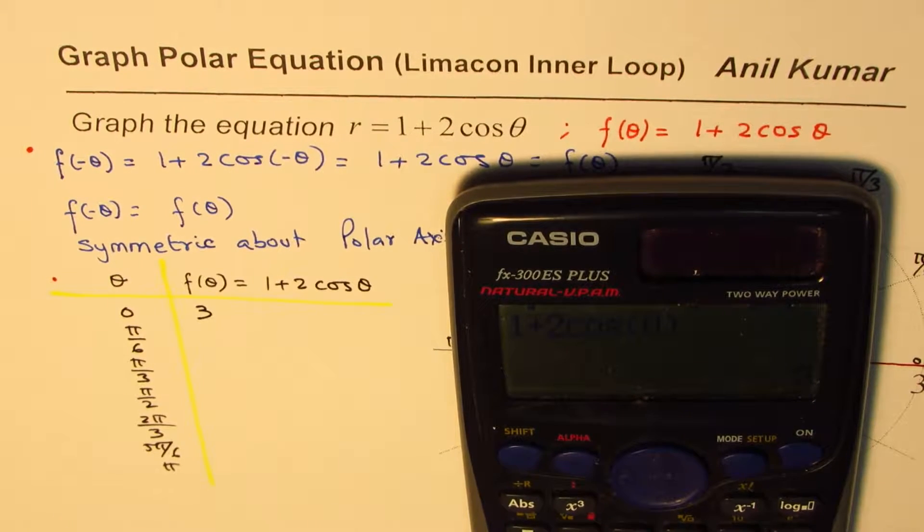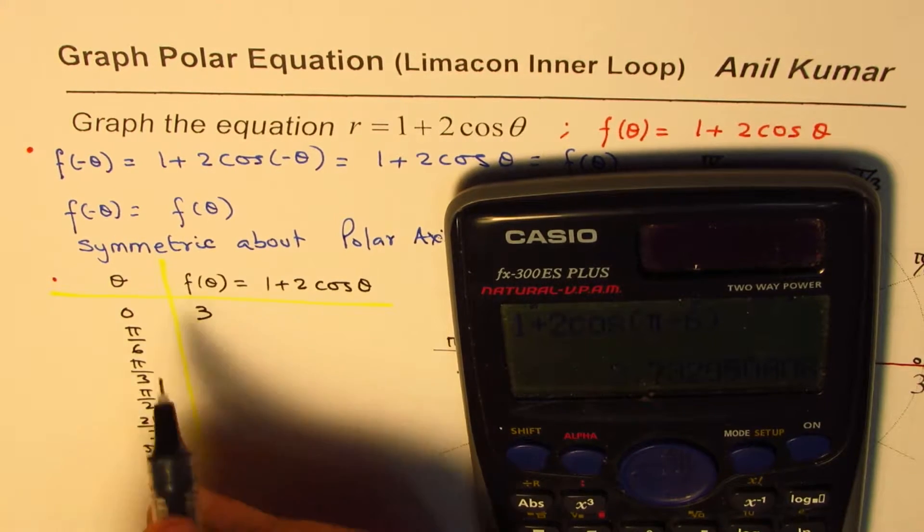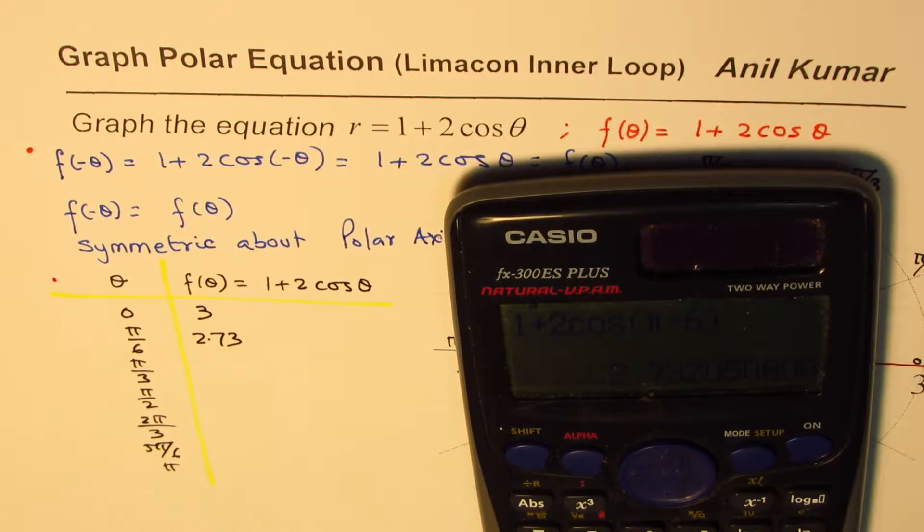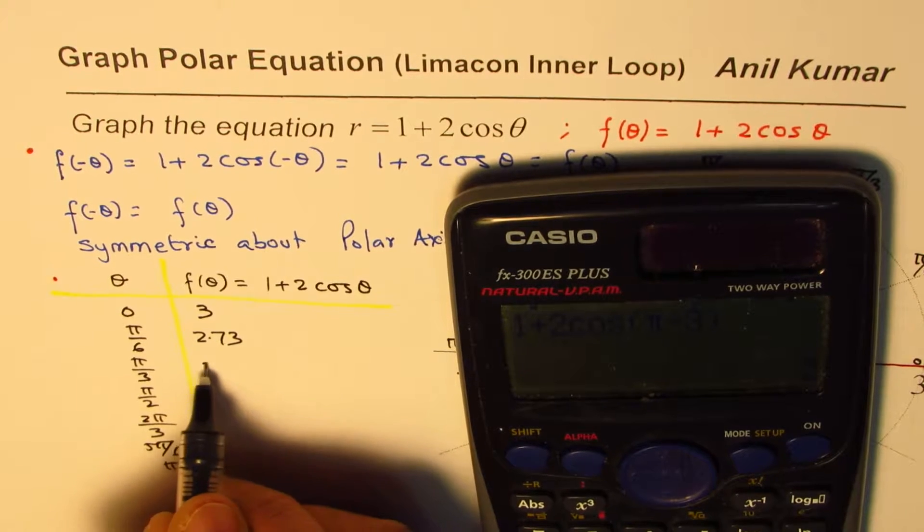Now the second one is 1 plus 2 times cos of pi by 6. So we have pi divided by 6 equals 2. In decimals, we will write all our answers in decimals, 2.73. And now we have 1 plus 2 times cos of pi by 3. So that is pi divided by 3 equals 2. This value is 2.